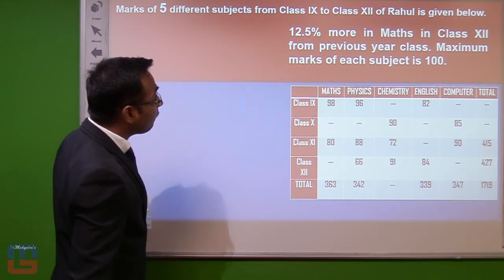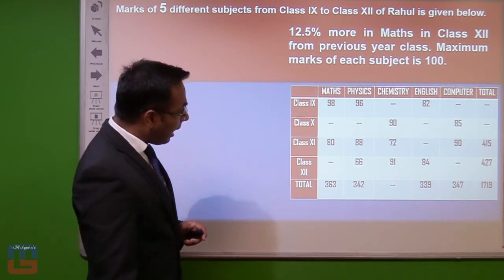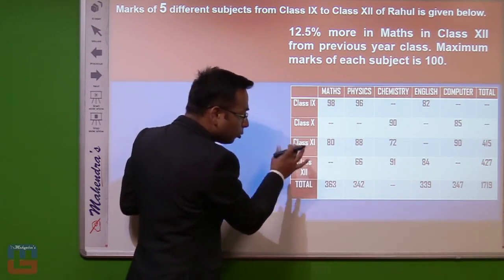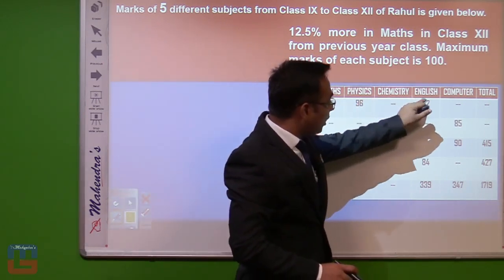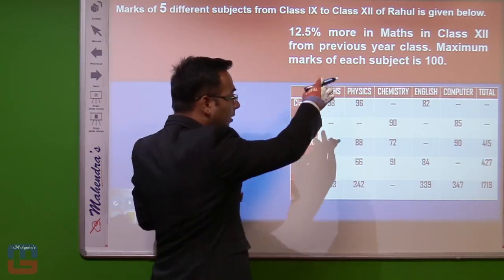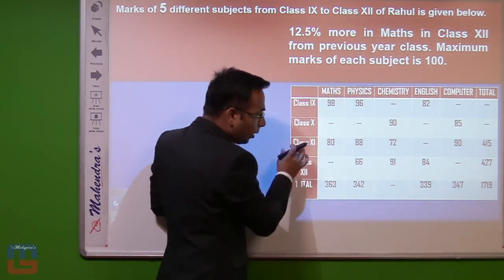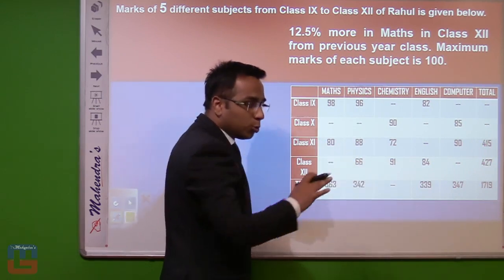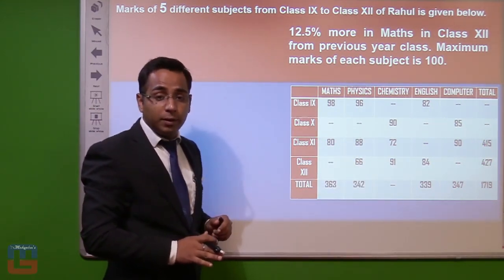The question says marks of five different subjects from class 9 to class 12 of Rahul are given. We have four classes — class 9, 10, 11, and 12 — for five different subjects: maths, physics, chemistry, English, and computer. We are given the row totals (total marks per subject across classes) and the column totals (total marks per class across subjects).